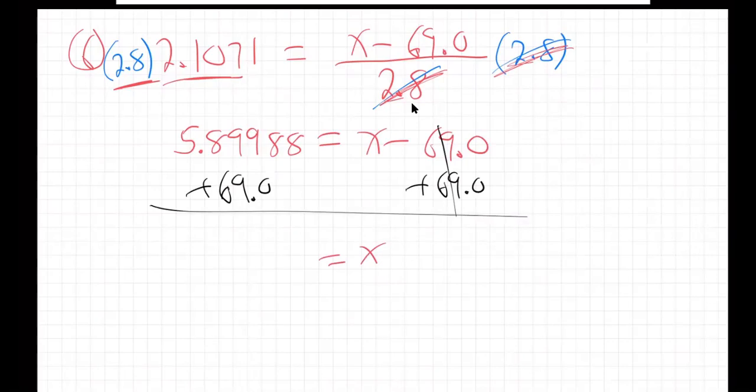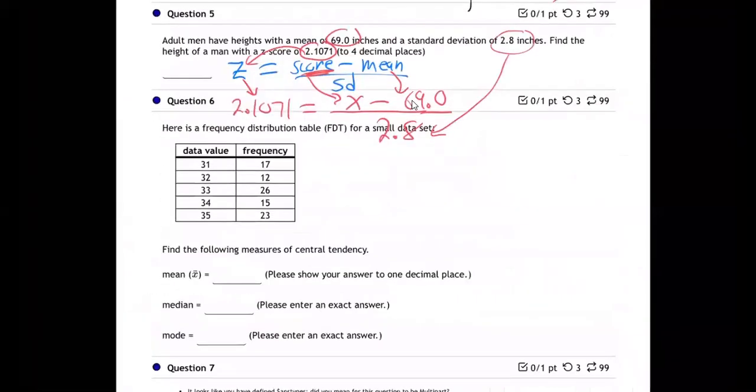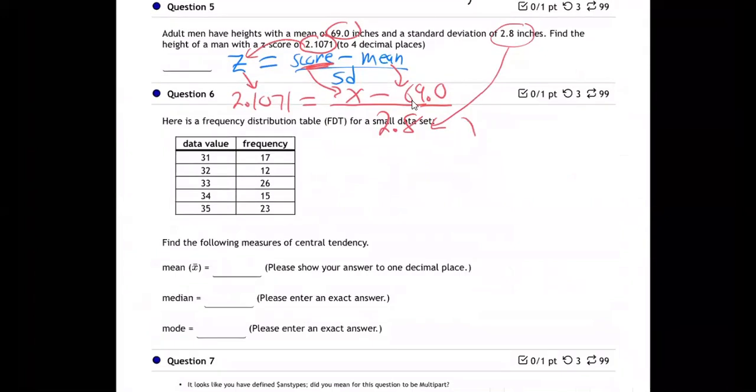And I'm getting 74.89988. There we go. So let me bring that value back, 74.89988. So there's how you solve that equation for x. Coming back up here.